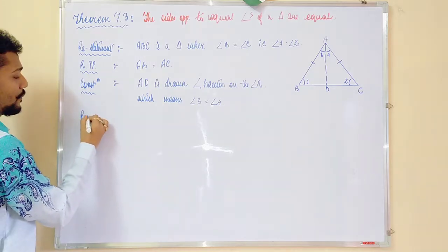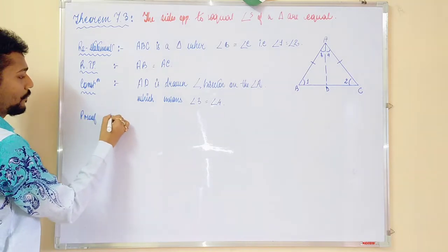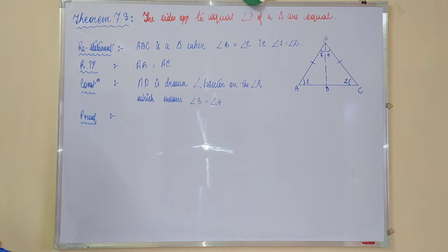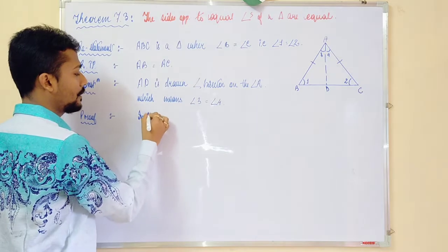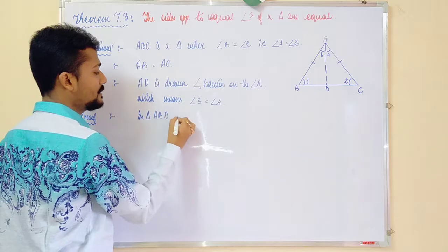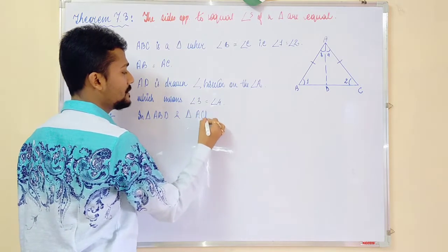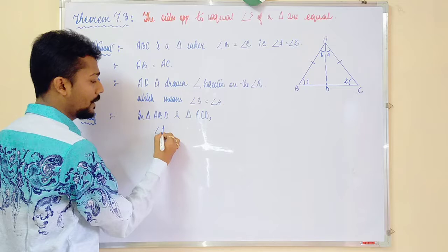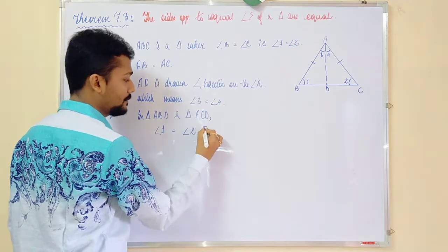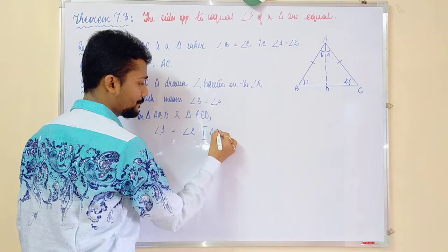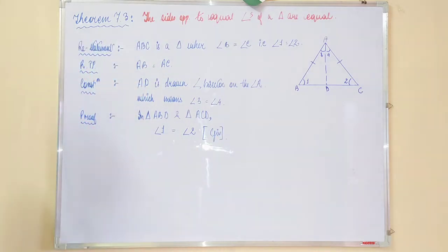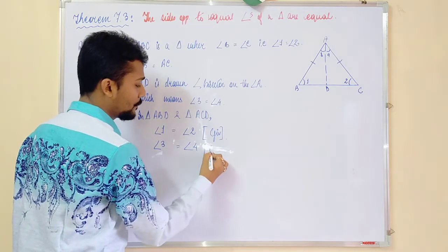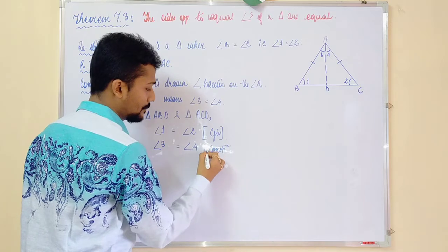Now, next comes the proof. In triangle ABD and triangle ACD, what we have? We have angle 1 is equal to angle 2, it is given. Then, angle 3 is equal to angle 4 that we have got by construction.